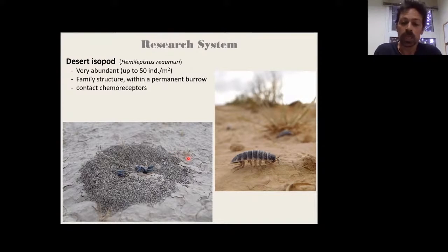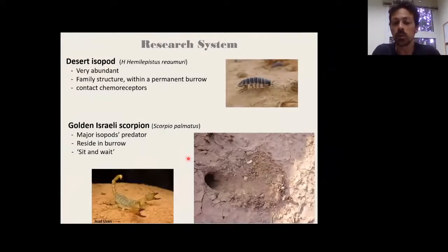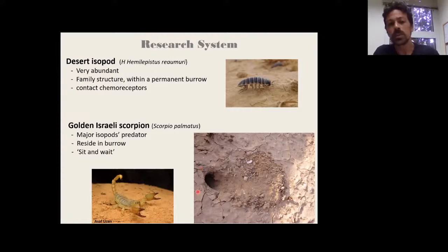They forage for about two hours in the very early morning every day, and then stay within the burrow for the rest of the day. For their perception, they use mostly their contact chemoreceptors, which are located here in the tip of their antenna, and they have a very poor eyesight. The major predator of this isopod is the golden isgari scorpion, which also resides within a burrow. This predator uses sit-and-wait predatory mode, meaning he's sitting here just in the entrance of the burrow. We cannot see it.